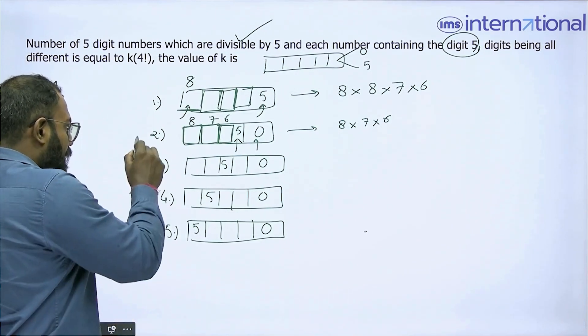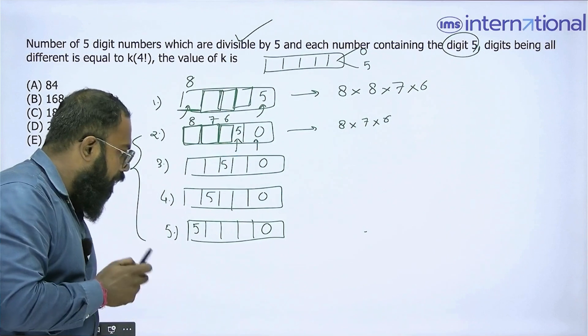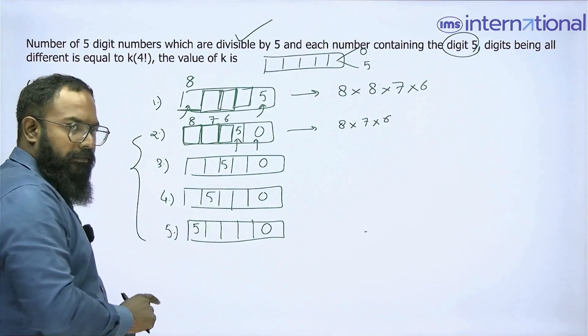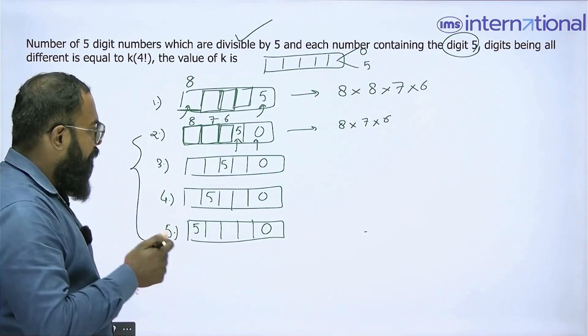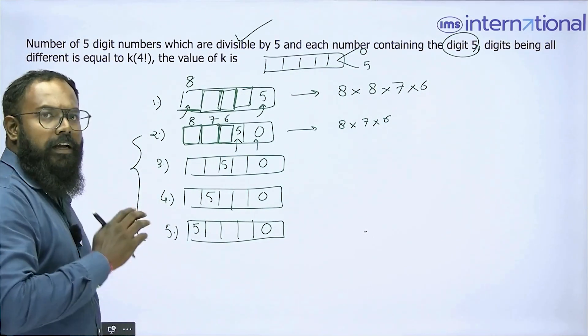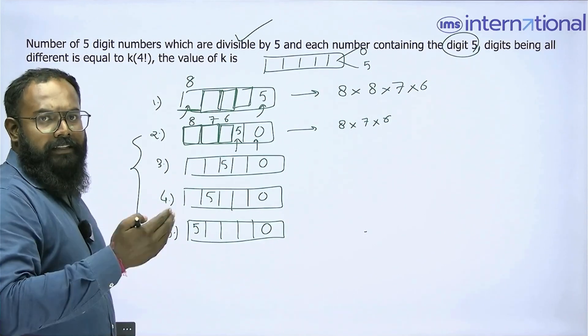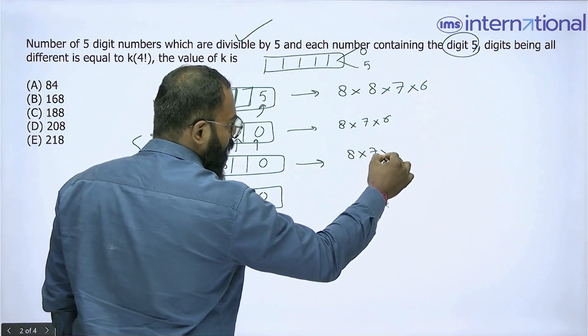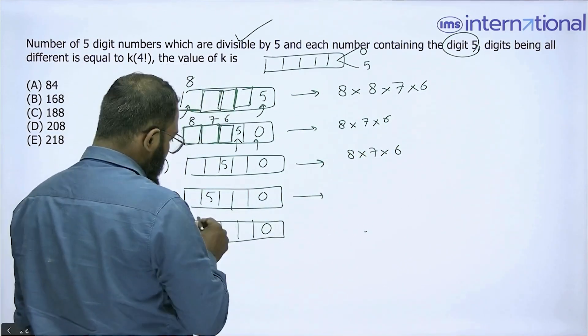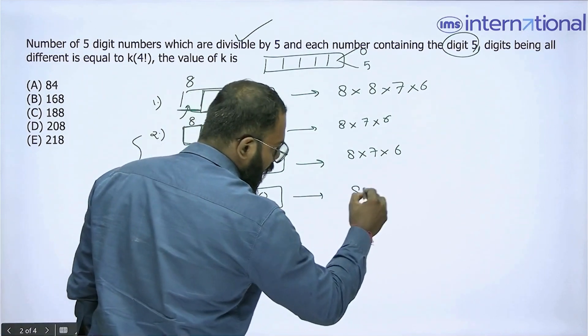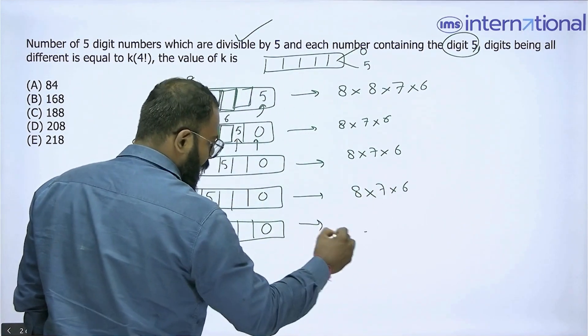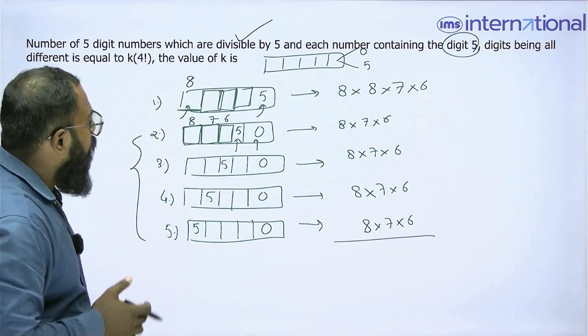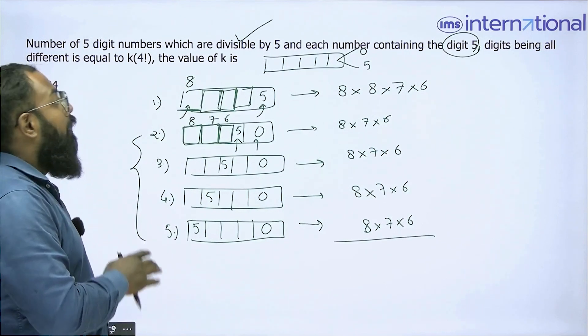Now if I see these four cases - 2, 3, 4, and 5 - all four of them are identical. Each one of them has a 0 and a 5, and the positions are fixed. That means I need to fill the remaining 3 boxes and I have 8, 7, and 6 options to fill them with. So again in case 3, I can get 8 × 7 × 6 numbers. Case number 4 can be dealt in 8 × 7 × 6 ways. And again case number 5 is going to be 8 × 7 × 6.